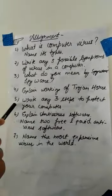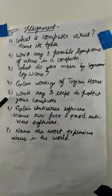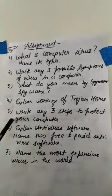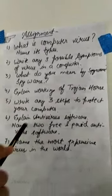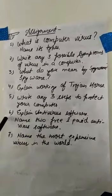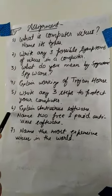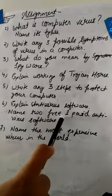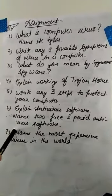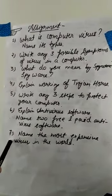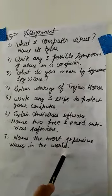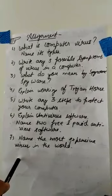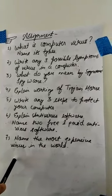Question five: write any three steps to protect your computer — you can write more than three, but three is the minimum. Question six: explain antivirus software with examples — name two free and two paid antivirus programs. Question seven: name the most expensive virus in the world. Complete all seven questions positively.